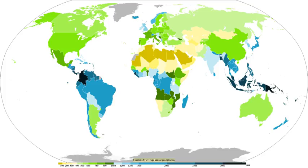In mountainous areas, heavy precipitation is possible where upslope flow is maximized within windward sides of the terrain at elevation. On the leeward side of mountains, desert climates can exist due to the dry air caused by compressional heating.